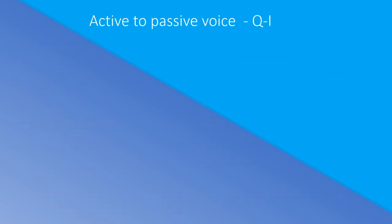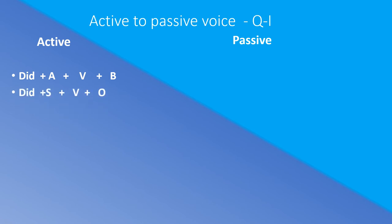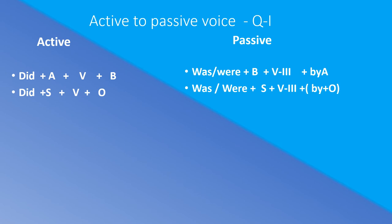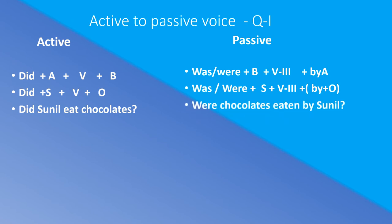Active to Passive Voice — Question Type 1. In this type, 'did' is used and the verb is always in the first form. Formula: Did + subject + verb (first form) + object? Passive: Was/Were + object + verb (third form) + by + subject? Examples: 'Did Sunil eat chocolates?' → 'Were chocolates eaten by Sunil?' 'Did we celebrate Diwali?' → 'Was Diwali celebrated by us?'